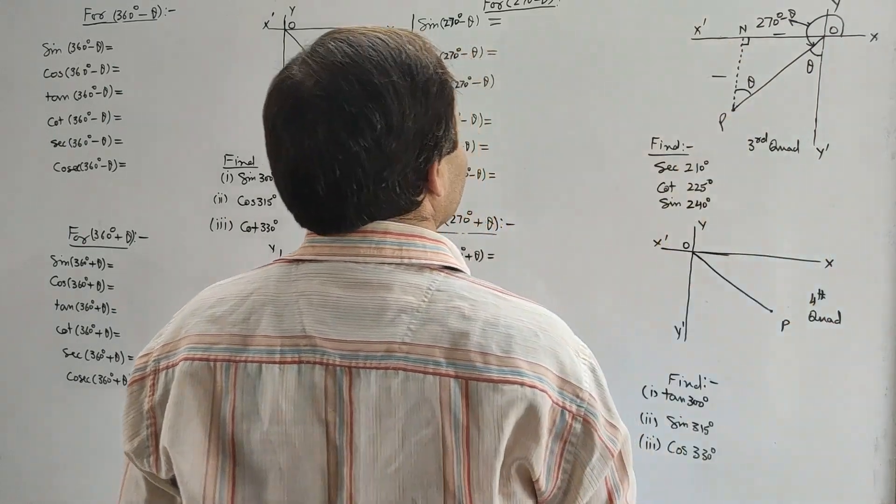For sin 1290°: it can be written as sin(1080° + 210°). Since 1080° is three full rotations of 360°, sin(1080° + 210°) = sin 210°. Then 210° = 180° + 30°; in the case of 180° there is no interchange, and 180° + 30° lies in the third quadrant where sin is negative. So sin 210° = minus sin 30° = minus 1 by 2.